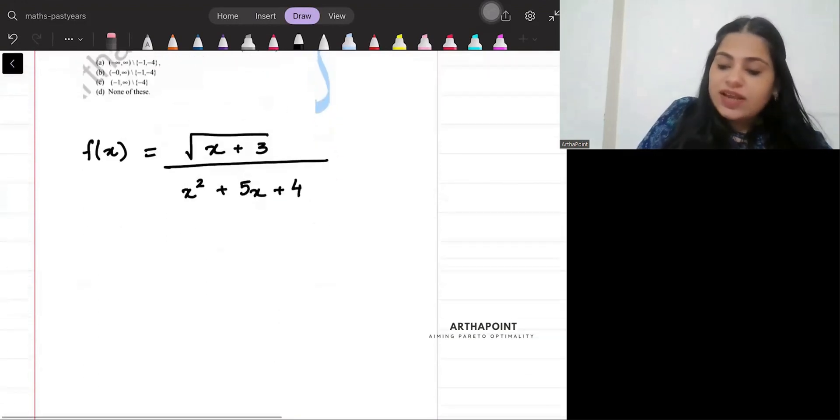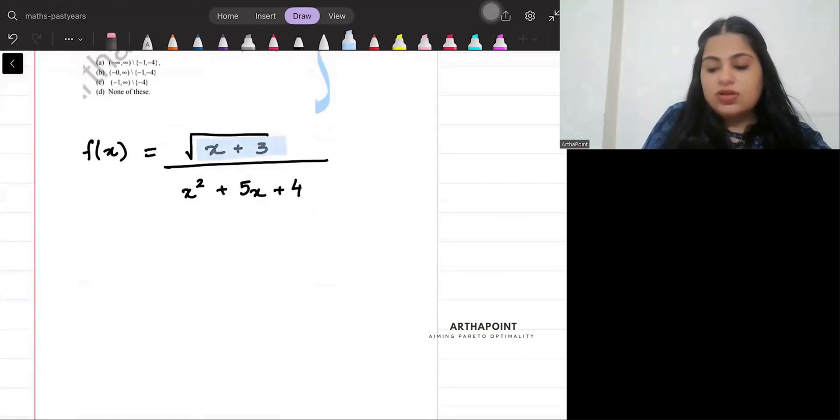And you have to find the domain of the function. Let us try to go ahead and find the domain. So we know that anything that comes under root cannot be negative, so first,